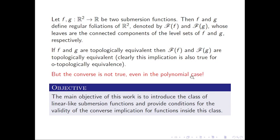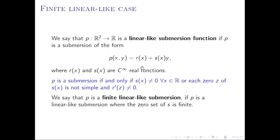The main objective of this work is to introduce the class of linear-like submersion functions and provide conditions for the validity of the converse implication for functions inside this class. We say that p is a linear-like submersion function if p is a submersion of a specific form, where r and s are C-infinity real functions. In the case when the zero set of s is finite, then we say that p is a finite linear-like submersion.